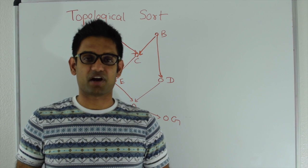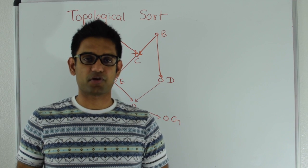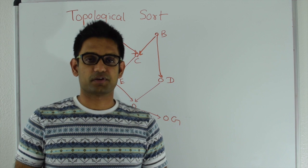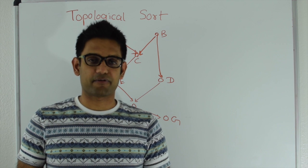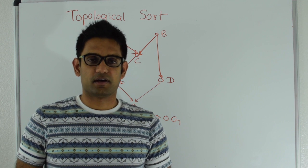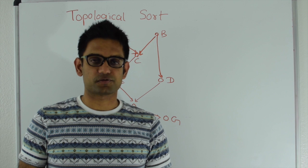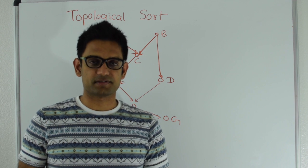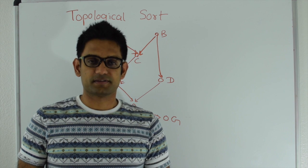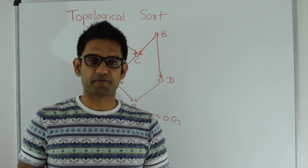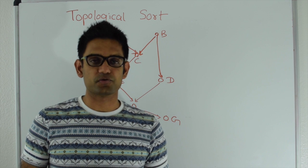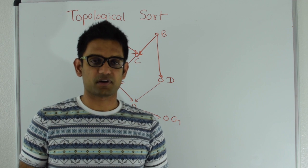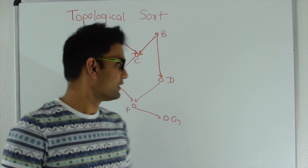Hello friends. My name is Tushar and today I'm going to talk about topological sort. Given a directed acyclic graph, topological sort is the ordering of vertices such that for every edge u,v going from u to v, u should always appear before v in the ordering.